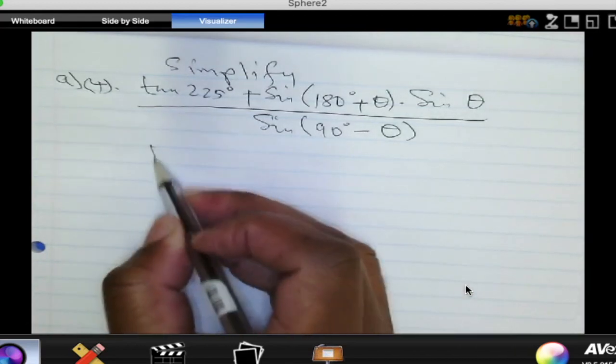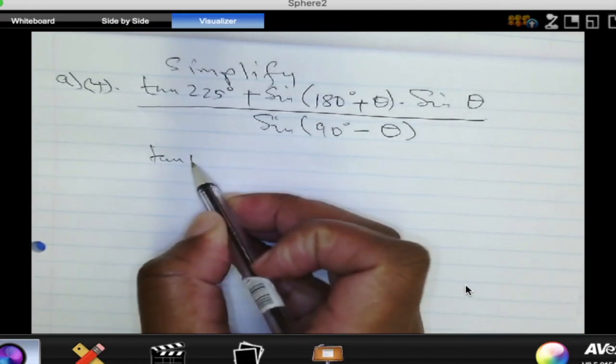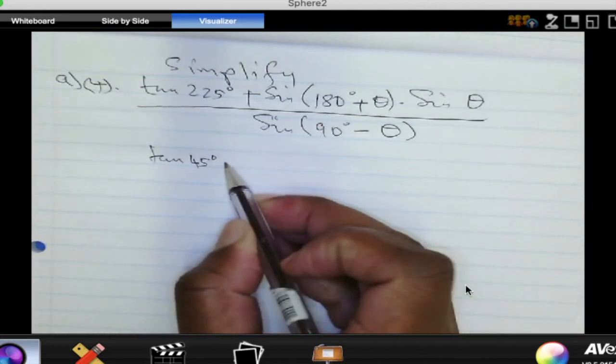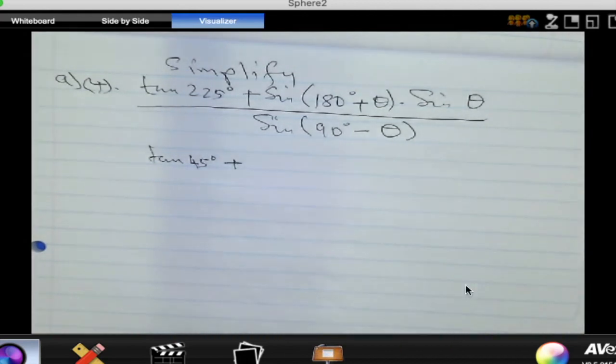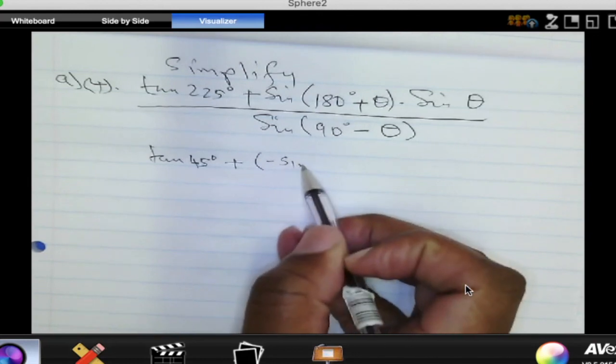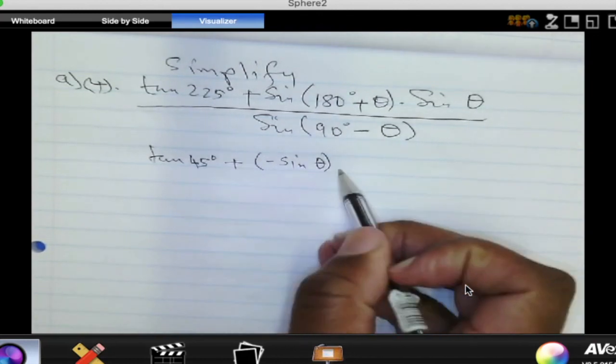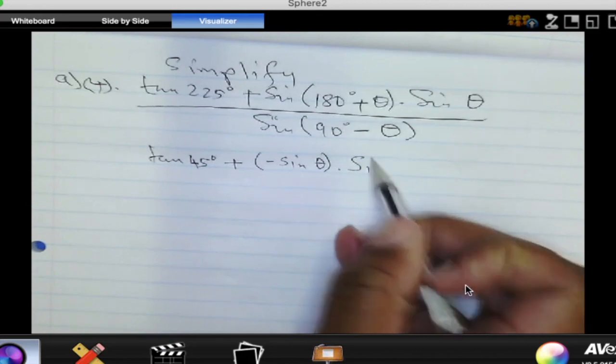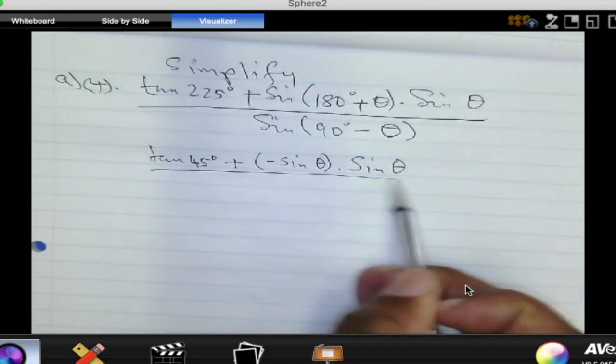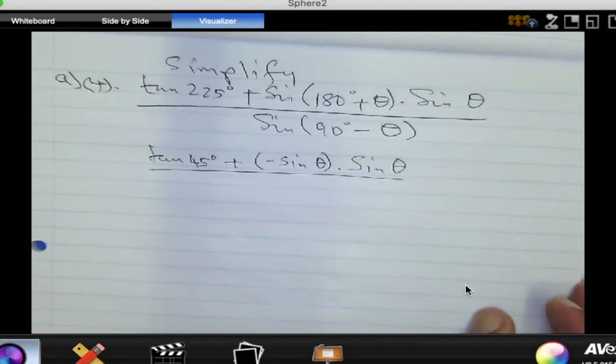So tan 225 changes to tan of 45. Now, that is a special angle. Then sine of 180 plus theta. Now, 180 plus theta is in quadrant 3. And we know that sine is negative there. So this should be negative sine of theta. And this is multiplied by sine of theta. And everything should be divided by the sine of 90 minus theta.